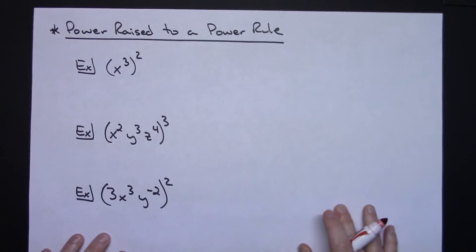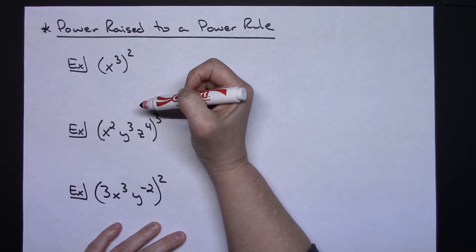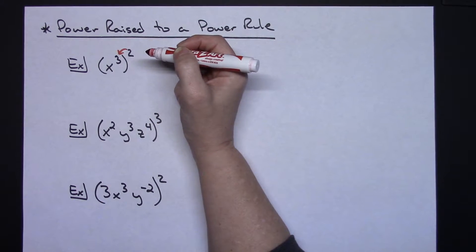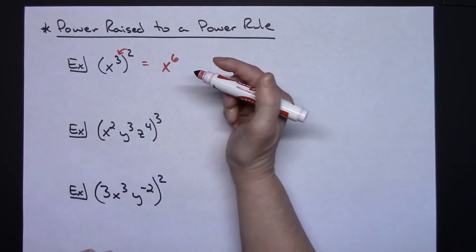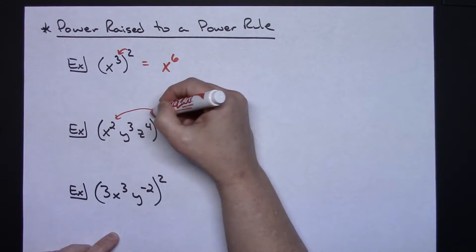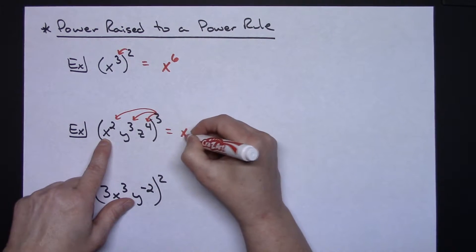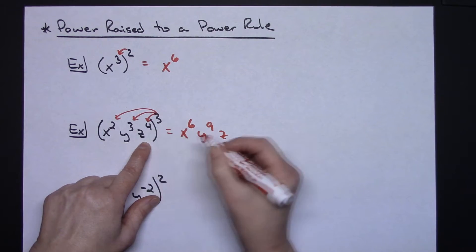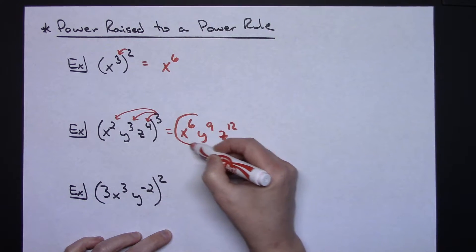Now let's look at a power raised to a power. The rule says to multiply the exponents. So for x to the 2 raised to the 3rd, we get x to the 6th. If you have more than one exponent on the inside, then the power-raised-to-a-power rule has to be applied to everything on the inside. So I've got 3 times 2, 3 times 3, and 3 times 4 — giving me x to the 6th, y to the 9th, and z to the 12th.